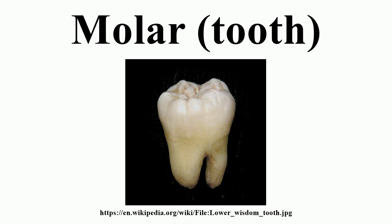In selenodont molars, the major cusp is elongated into a crescent-shaped ridge. Examples include most even-toed ungulates such as cows and deer. Many carnivorous mammals have enlarged and blade-like teeth especially adapted for slicing and chopping, called carnassials. A general term for such blade-like teeth is sectodont or plagiaulacoid.